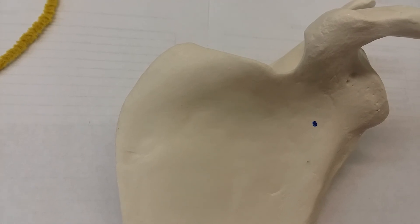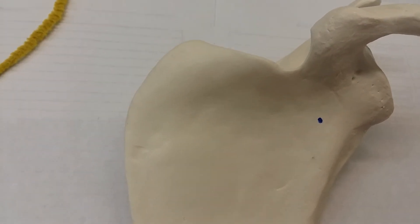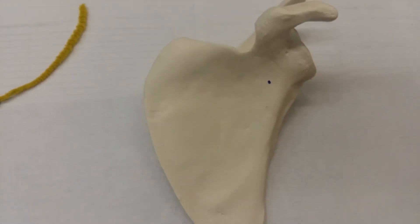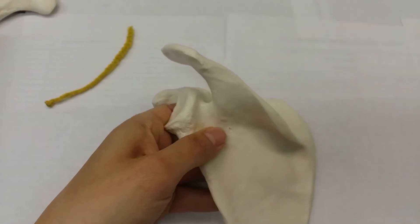Then we're going to have our infraspinous fossa. That is going to be on the posterior side. So again, anterior, flip it over to posterior.